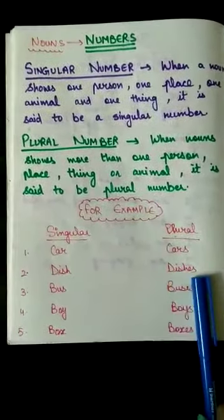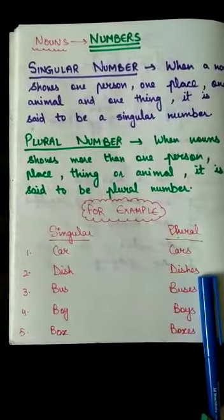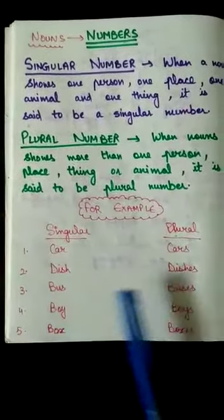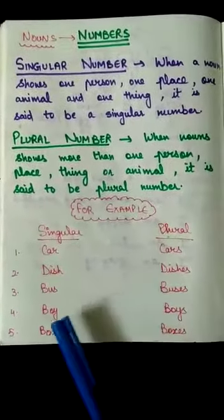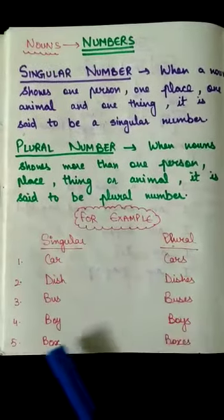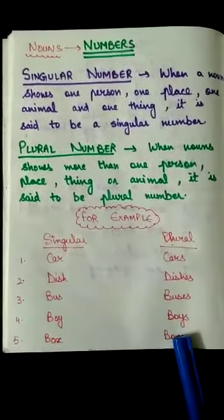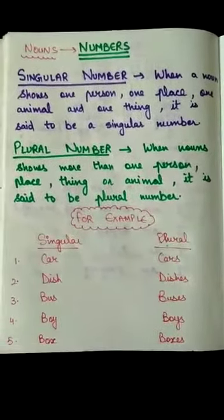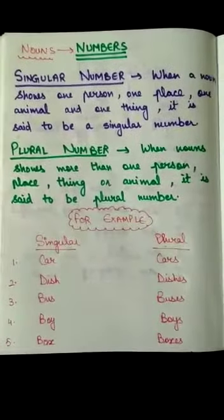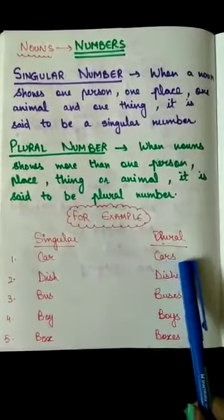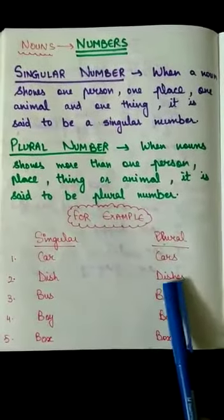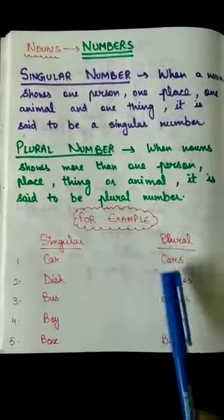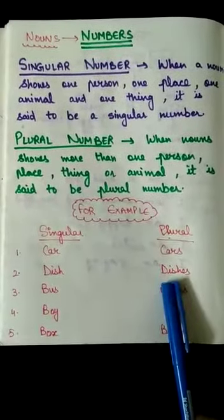Now, here I have put ES to make it into the plural form. Bus, buses. Boy, boys. Box, boxes. So this is all about the numbers. But you must have noticed here, kids, that at some places, ma'am has used S. Whereas, on some places, ma'am has used ES to convert it into the plural form.